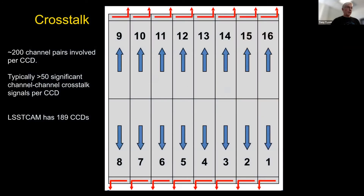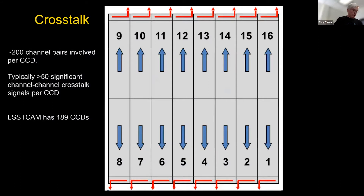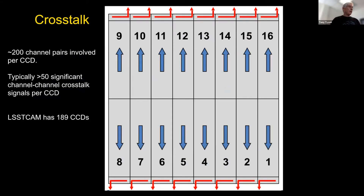The CCDs are split up into 16 separate segments, each of which has its own output amplifier. The reason we do this is because we want to read out the entire focal plane — 3.2 gigapixels — in only two seconds, so we have to do it in parallel. The problem is that these output channels crosstalk with one another's video channels. There are in principle about 200 channels involved, but in practice we found that at least 50 crosstalk coefficients must be measured, and there are 189 of these CCDs, so we have to multiply by 189.